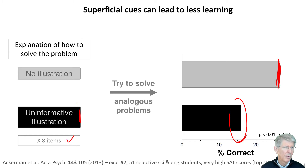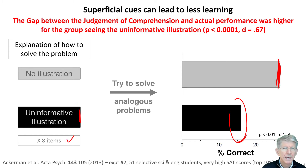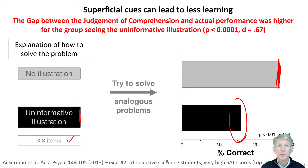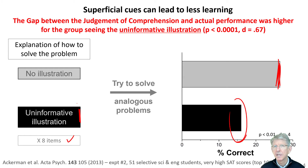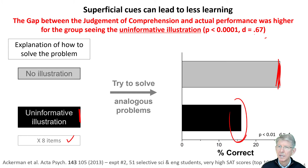We'll talk about why that might be in the next slide. The gap between the judgment of comprehension and actual performance was distinctly higher for the group seeing the uninformative illustrations. Remember, they thought they knew more, but when they were actually tested, they knew less. That's the gap, and you can see here it's quite a large gap.